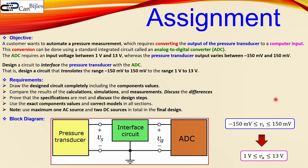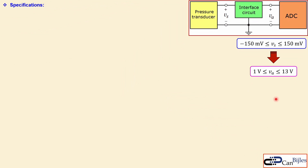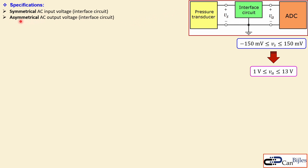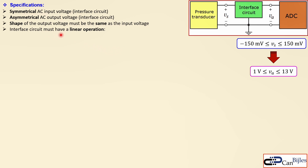So we need to make a translation of Vs between these two values to VA which is between those two. Now we need to go to the more specific requirements. We need a symmetrical AC input voltage for our interface circuit because that is what you get from the pressure transducer. But we need to provide an asymmetrical AC output voltage from this interface circuit because that goes into the ADC. The shape of the output voltage must be the same as the input voltage — we don't want any distortion or shaping. The interface circuit must have linear operation, meaning the information from the pressure sensor is not obscured or distorted.